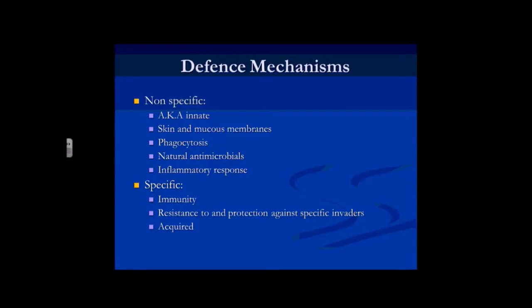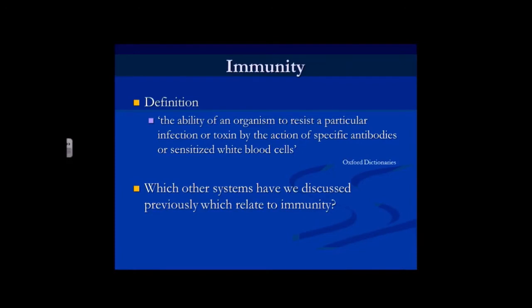However, immunity doesn't occur of its own accord — it has to come from somewhere. That's why we say it's acquired. The definition of immunity is: the ability of an organism to resist a particular infection or toxin by the action of specific antibodies and/or sensitised white blood cells. We've talked about other systems previously — particularly blood cells, and also the lymphatic system and its role in immunity, scanning the fluid within the body and passing it through the lymph nodes to present whatever might be in that fluid to the lymphocytes.